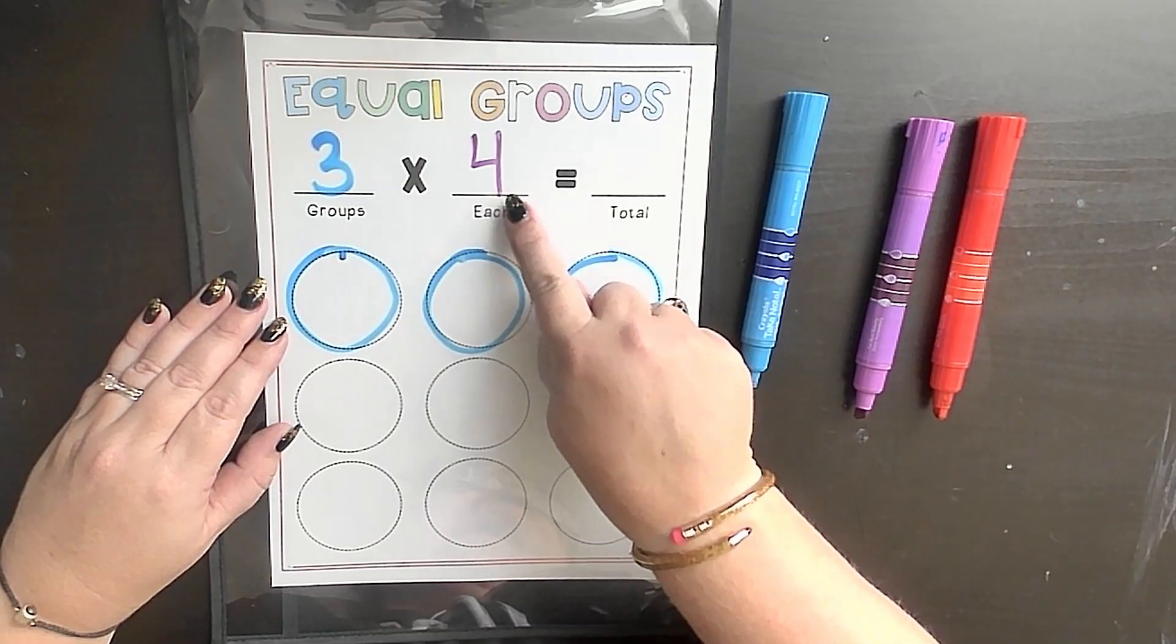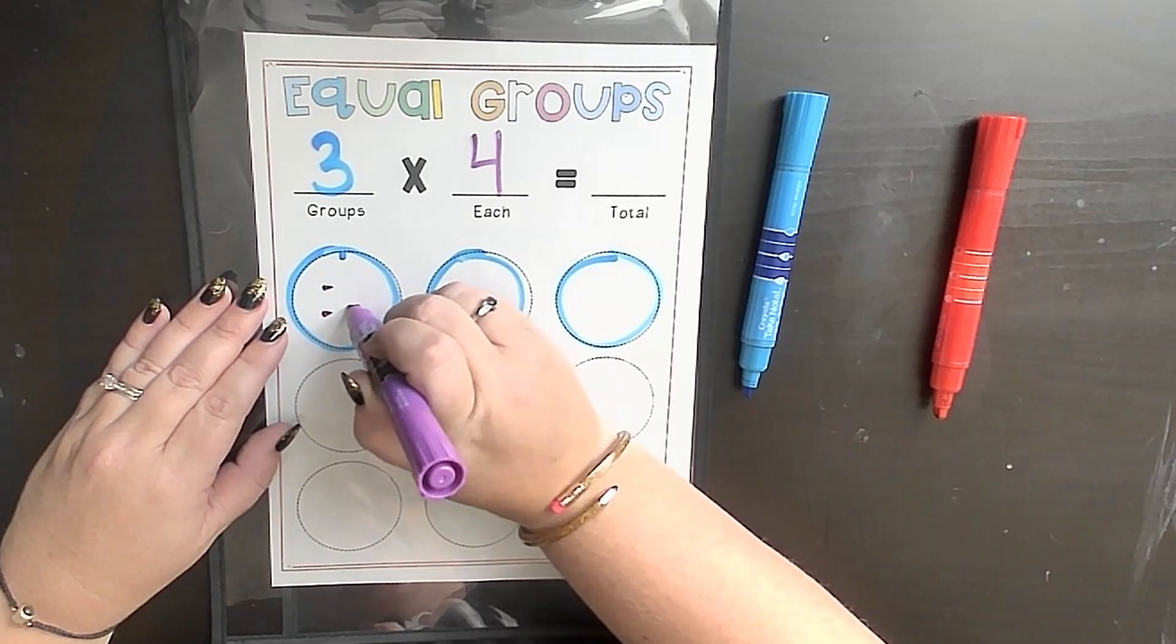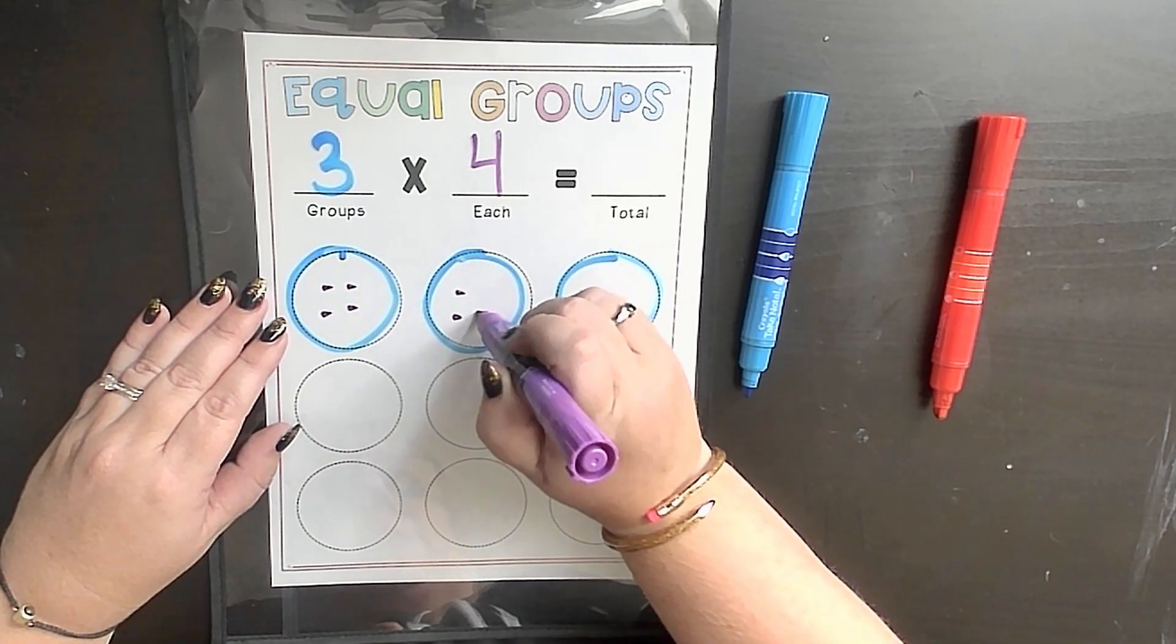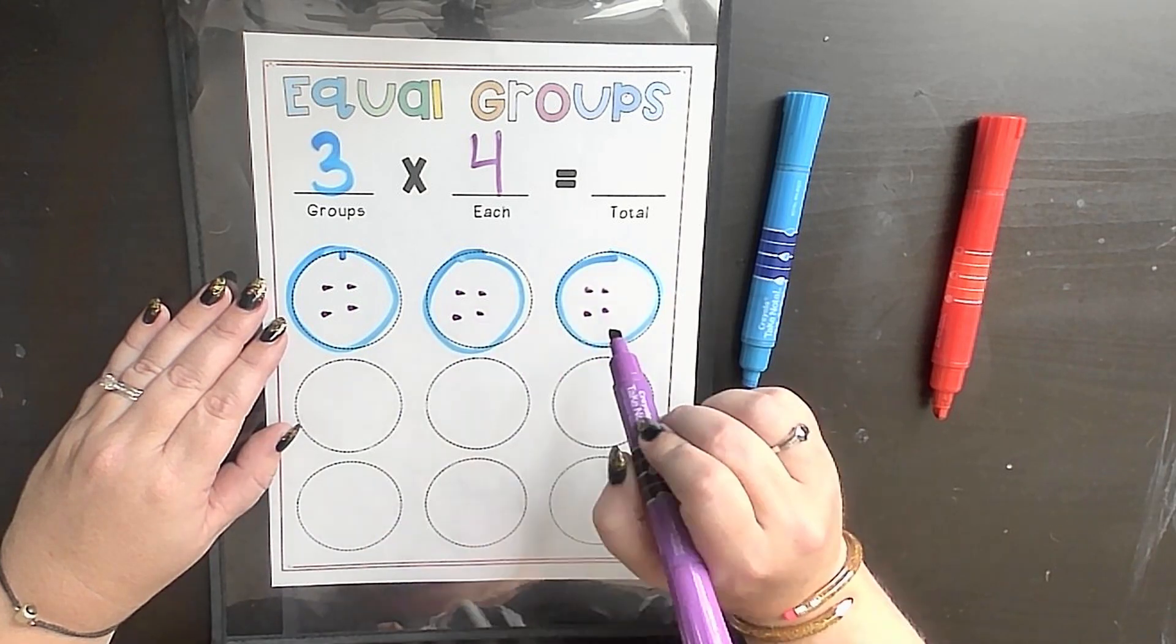Second step is modeling those 4 in each. I like to use this dice strategy, meaning I put it in an organized way to help me make sure I can count up each of my pieces in each group.